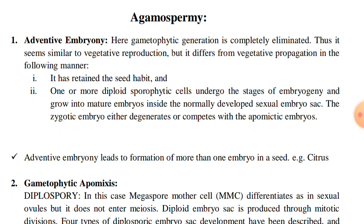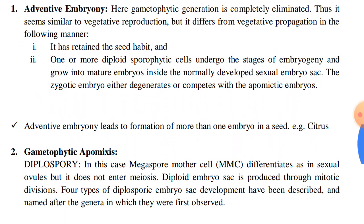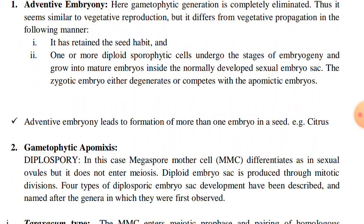Number one, it has retained the seed habit. One or more diploid sporophytic cells undergo the stages of embryogeny and grow into mature embryos inside the normally developed sexual embryo sac. The zygotic embryo either degenerates or competes with the apomyctic embryos. Adventitious embryony leads to formation of more than one embryo in a seed — for example, citrus. This is a very common example where polyembryony has been seen.